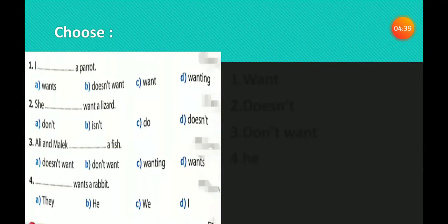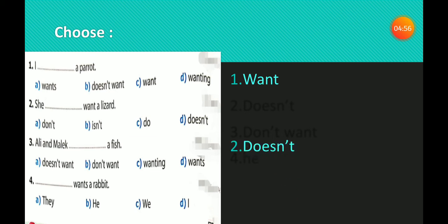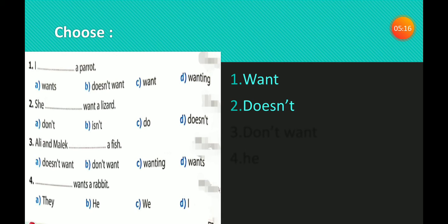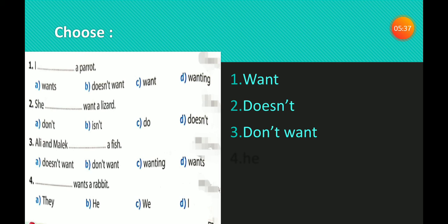Here, choose the correct answer, please. Number one: I ___ a parrot. Answer: 'I want a parrot.' Why? Because with 'I,' we use 'want' plus infinitive. Number two: She ___ want a lizard. Answer: 'doesn't.' Why? Because he, she, it takes verb-S, and the negative of verb-S is 'doesn't' plus infinitive. Number three: Ali and Malik ___ a fish. They are plural, so we use 'they' — they plus verb infinitive, negative is 'don't want.' Ali and Malik don't want a fish.